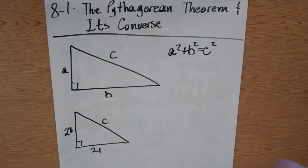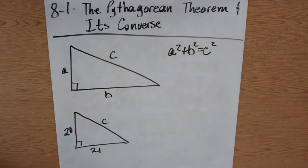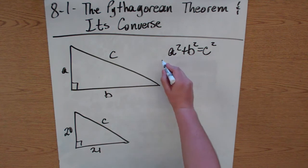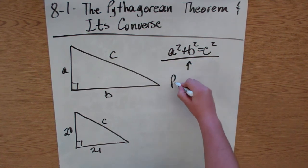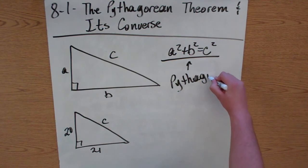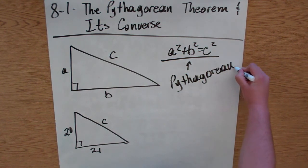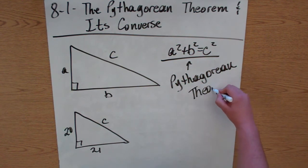All right, in this video we're going over 8-1, the Pythagorean Theorem and its converse. The Pythagorean Theorem is a squared plus b squared equals c squared.